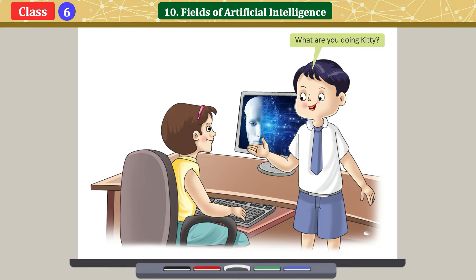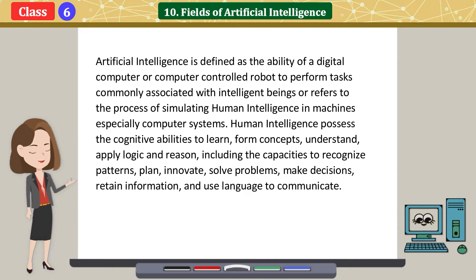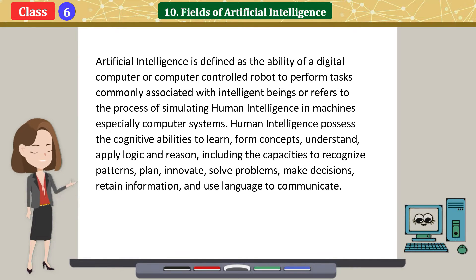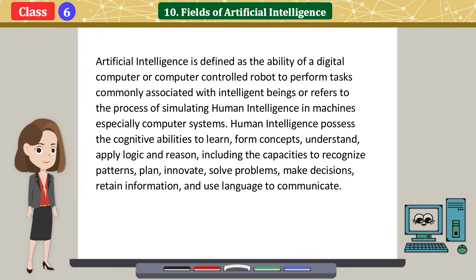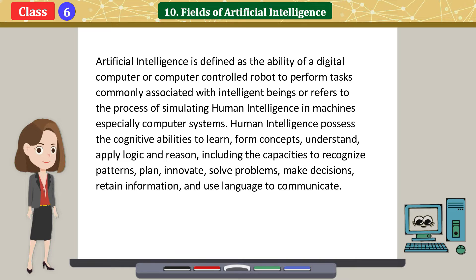I am looking for the AI-based devices and their applications in our daily life. Artificial Intelligence is defined as the ability of a digital computer or computer-controlled robot to perform tasks commonly associated with intelligent beings, or refers to the process of simulating human intelligence in machines, especially computer systems. Human intelligence poses the cognitive abilities to learn, form concepts, understand, apply logic and reason, including the capacities to recognize patterns, plan, innovate, solve problems, make decisions, retain information, and use language to communicate.